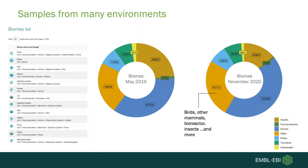Within MGnify we have samples from many environments, and we've seen the biomes become more diverse over time. You can see biomes and how they've changed from May 2019 to November 2020. We're seeing more diversity, moving away from just human data — looking at things like food production, terrestrial soil and grasslands, wastewater, and also birds, other mammals, bioreactors, insects, and other engineered environments.